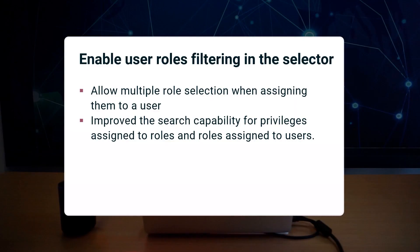In the previous version, users were unable to filter roles — their only option was to scroll through them. However, with this new version, users can now select multiple rows simultaneously.